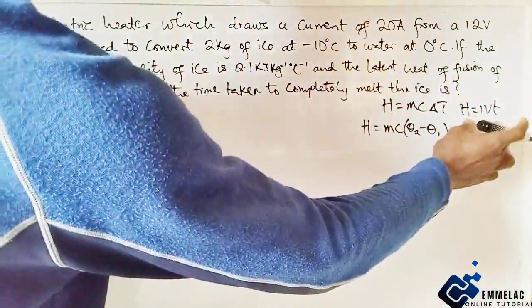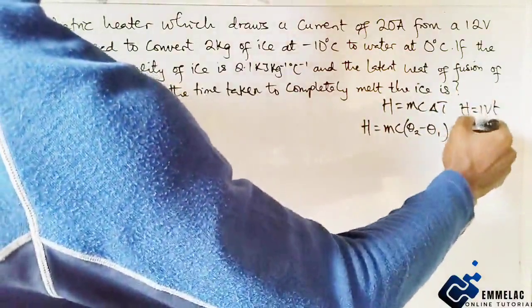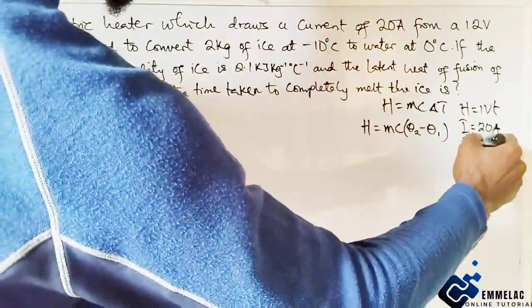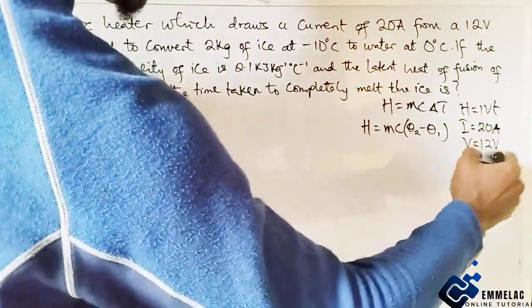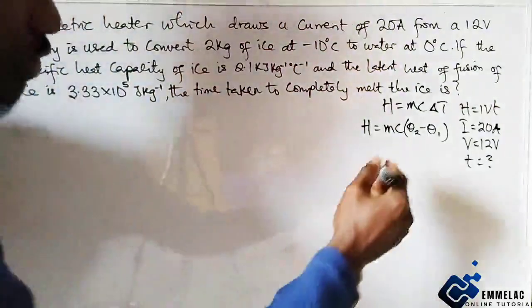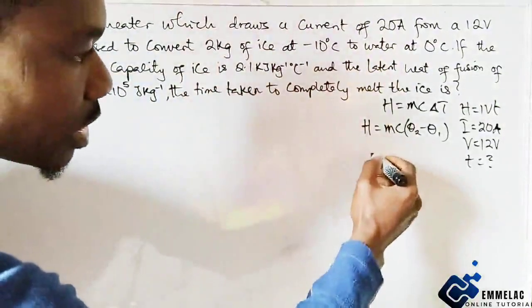For the electrical heat energy, our current here is 20 amperes, our voltage here is 12 volts, and our time is what we are looking for.